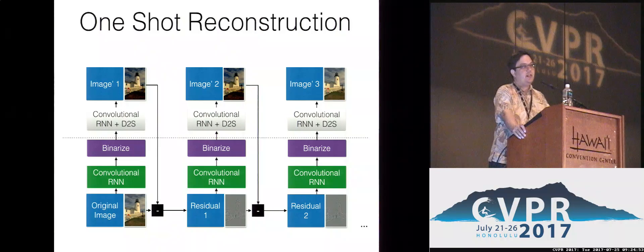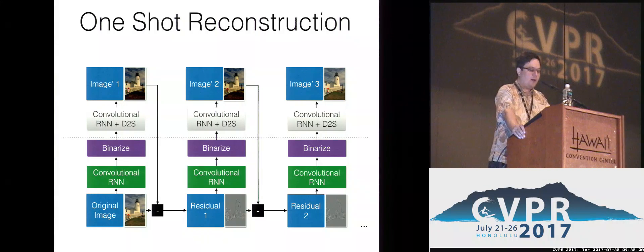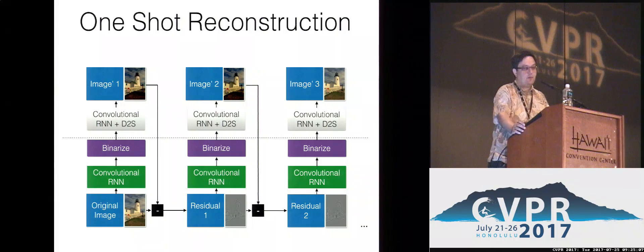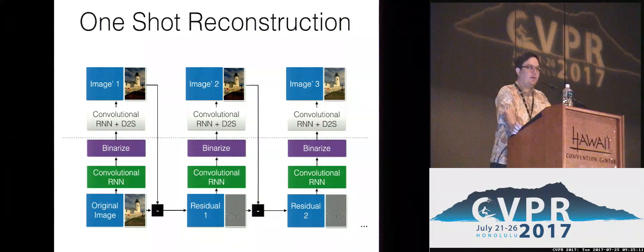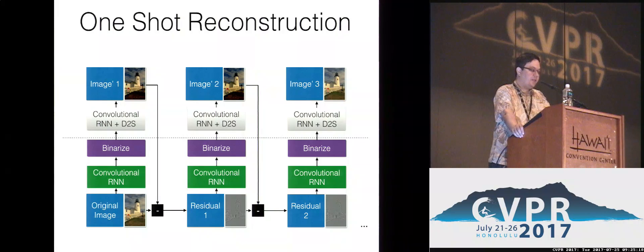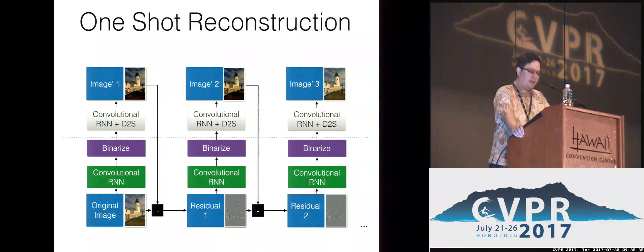What I just described gives us exactly one quality level. But we would like to have a varying level of quality. In order to achieve that, we instantiate the encoder network many different times — as many times as we would like to achieve a particular quality level. However, we have a problem: what do we feed the network at the next time step? What we do is take the difference between the current predicted image and the original, and feed this residual as input to the encoder.